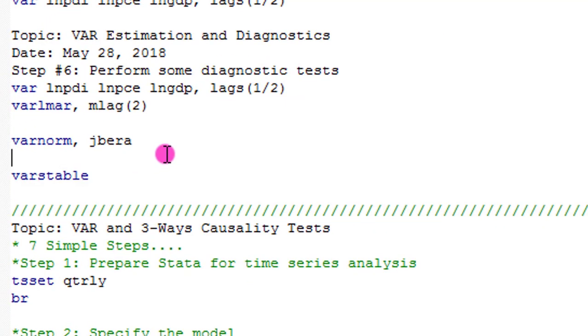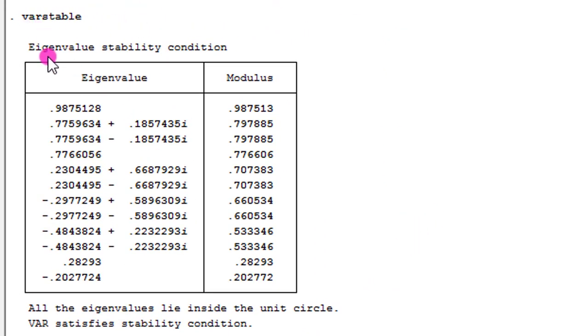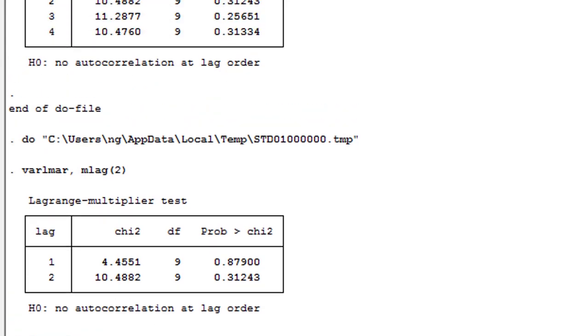Lastly, we test for stability using this command. Highlighting it and execute. Here we have all the eigenvalue stability conditions all listed out. The most interesting information here is that all the eigenvalues lie inside the unit circle and the VAR satisfies stability condition.